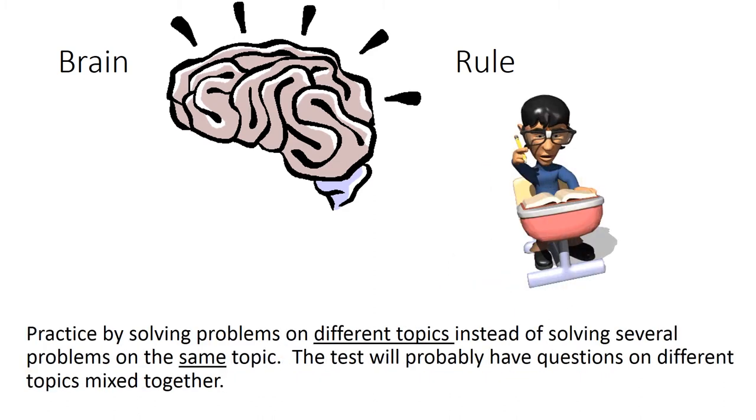Brain rule. Practice by solving problems on different topics instead of solving several problems on the same topic. The test will probably have questions on different topics mixed together.